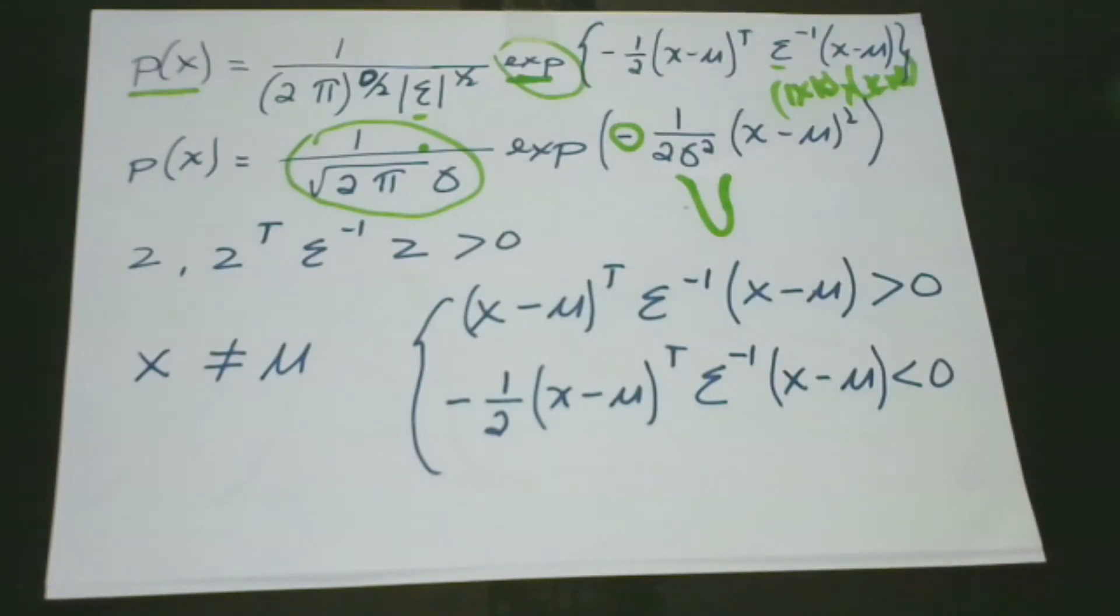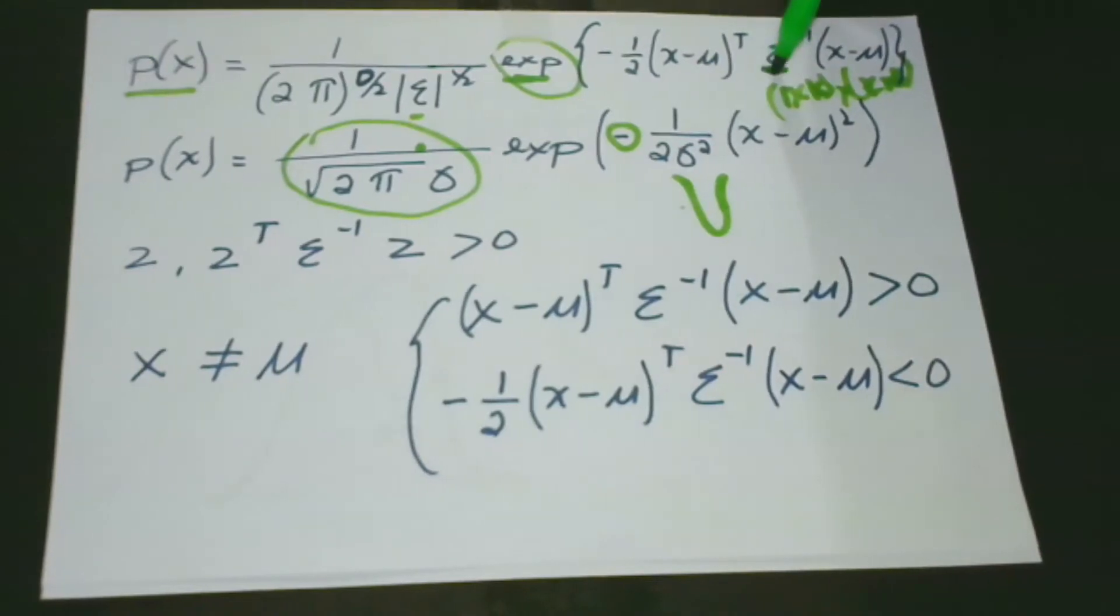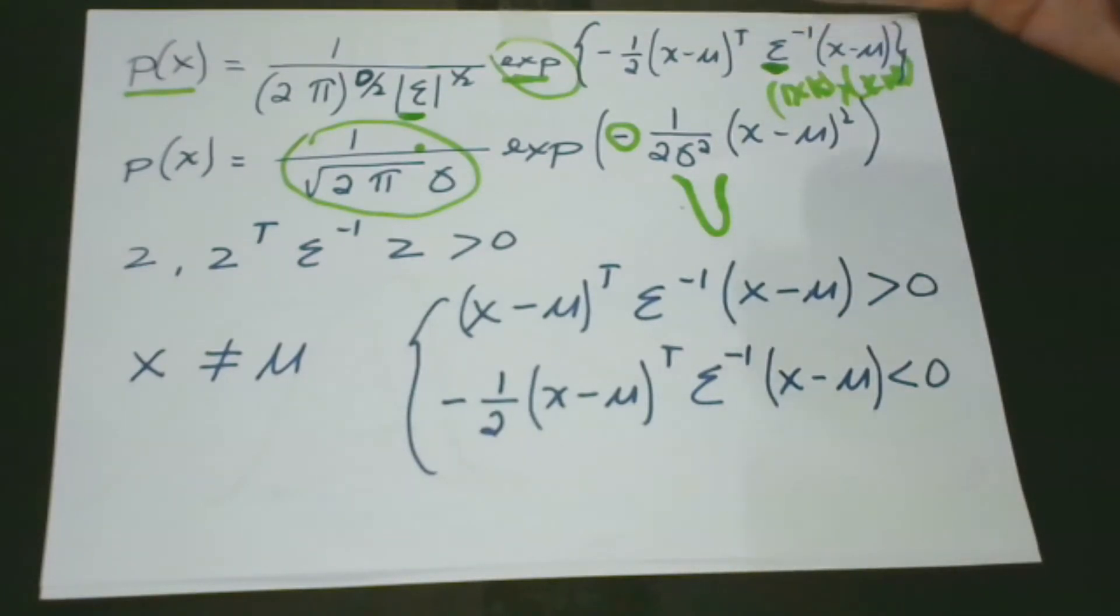So the sigma, in this case, we have here. The sigma is in positive definite. And also here. It's in positive definite. And we know that if the inverse of any positive matrix is also positive definite,